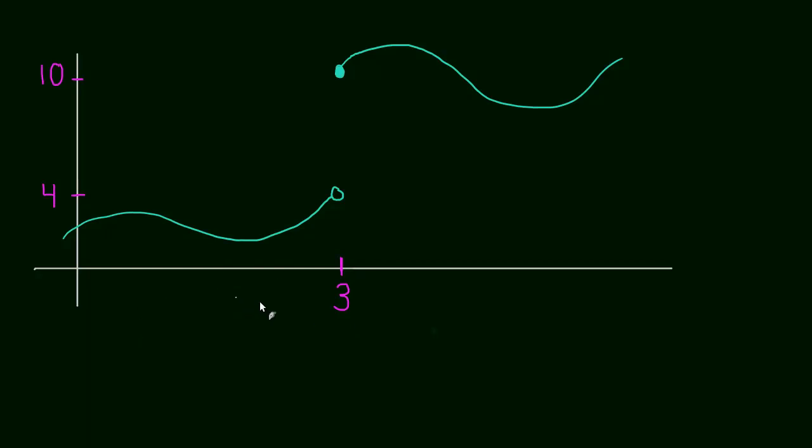If we wanted to look at what happens as we approach 3 from just one side, so from numbers less than 3, well this would mean that as we're getting closer and closer to 3, the function is getting closer and closer to the height of that hole, which is labeled as 4.